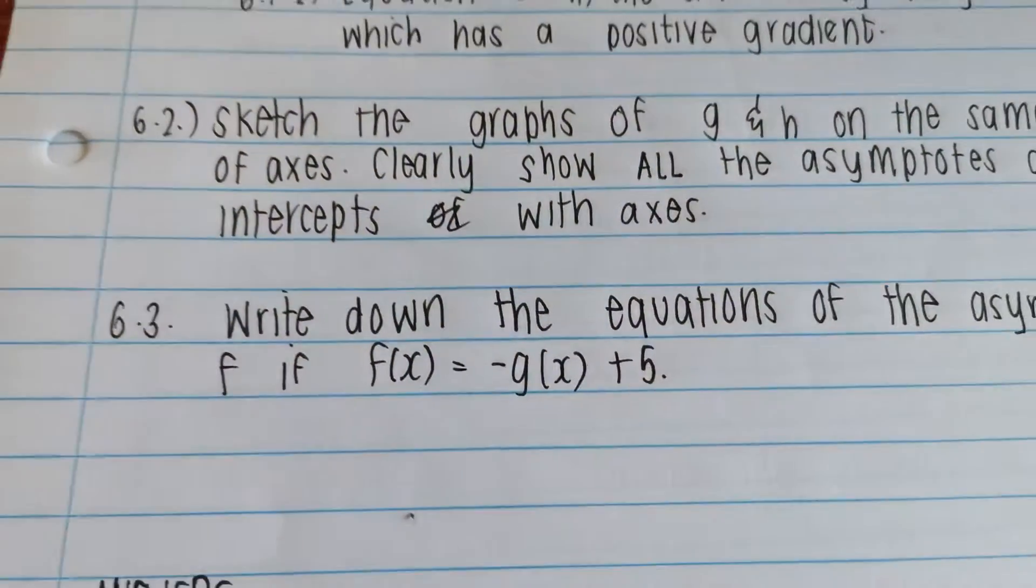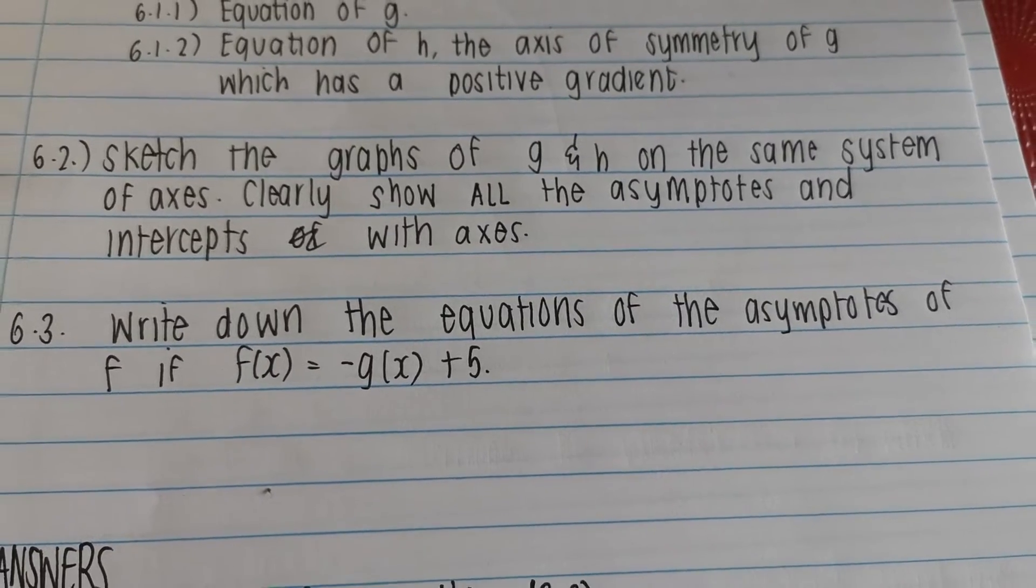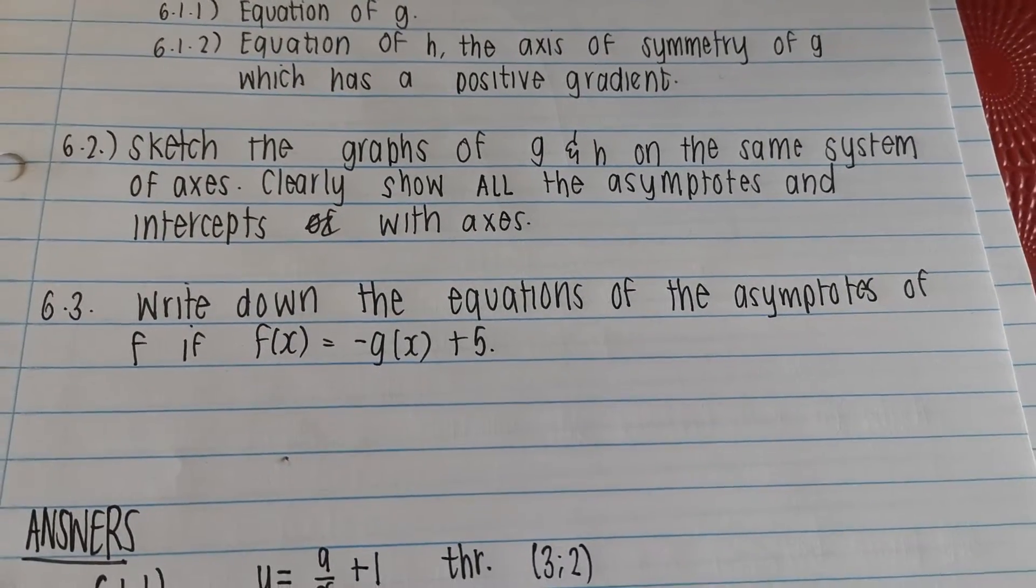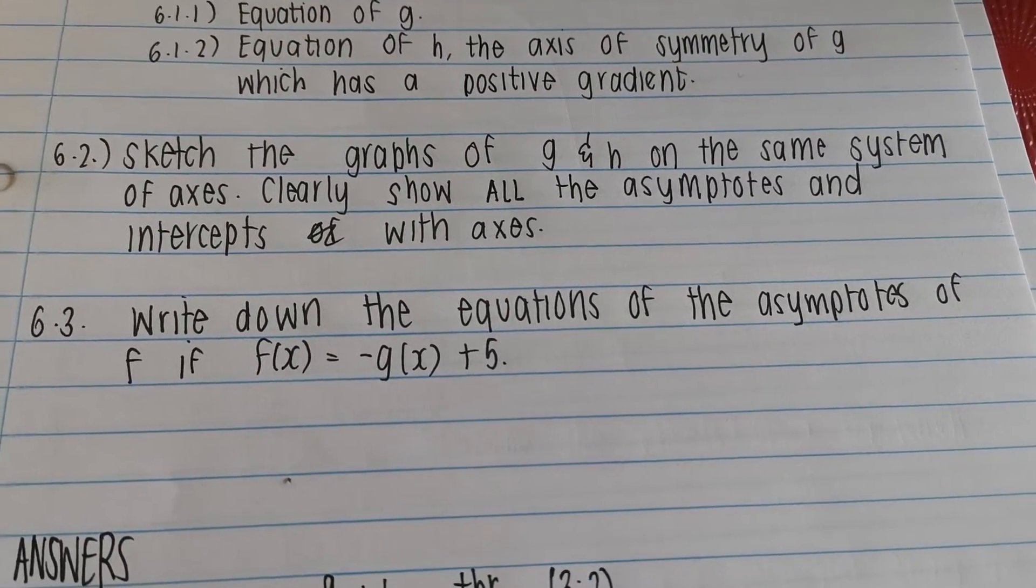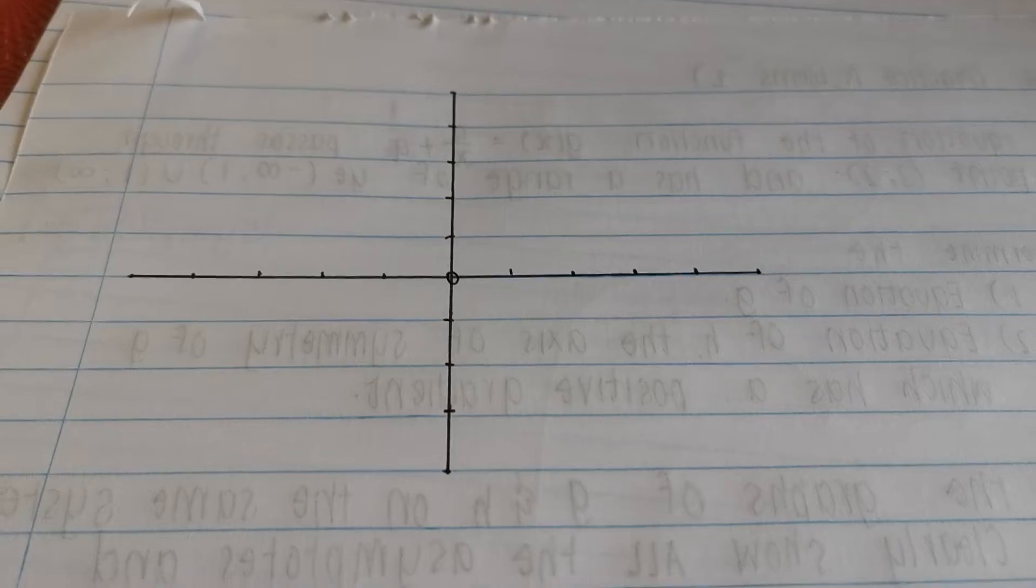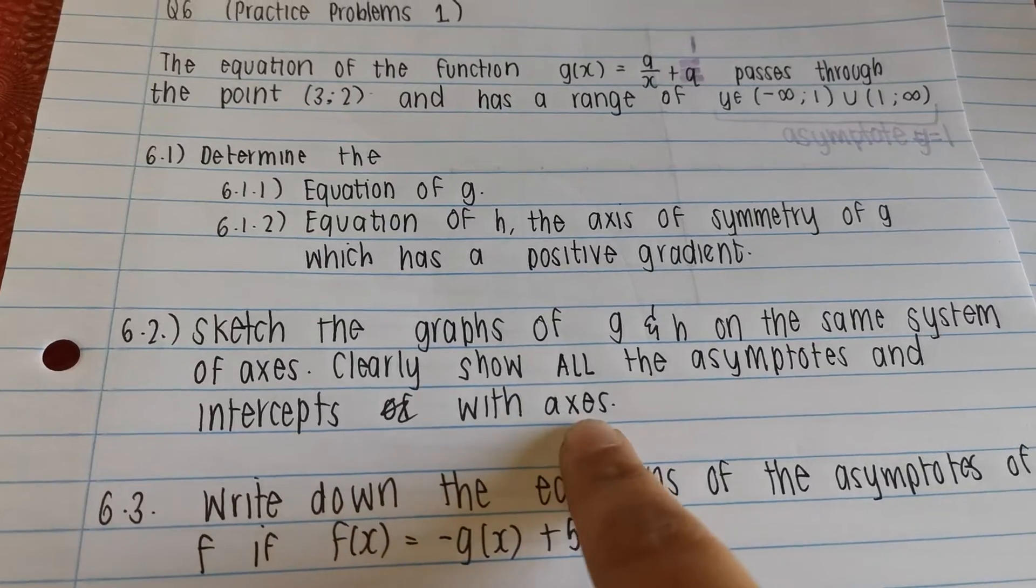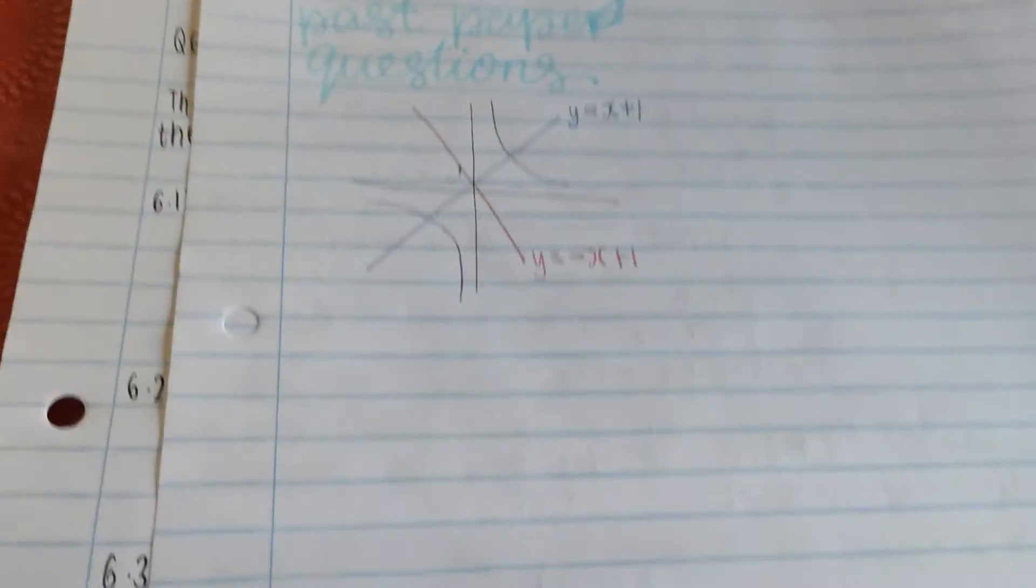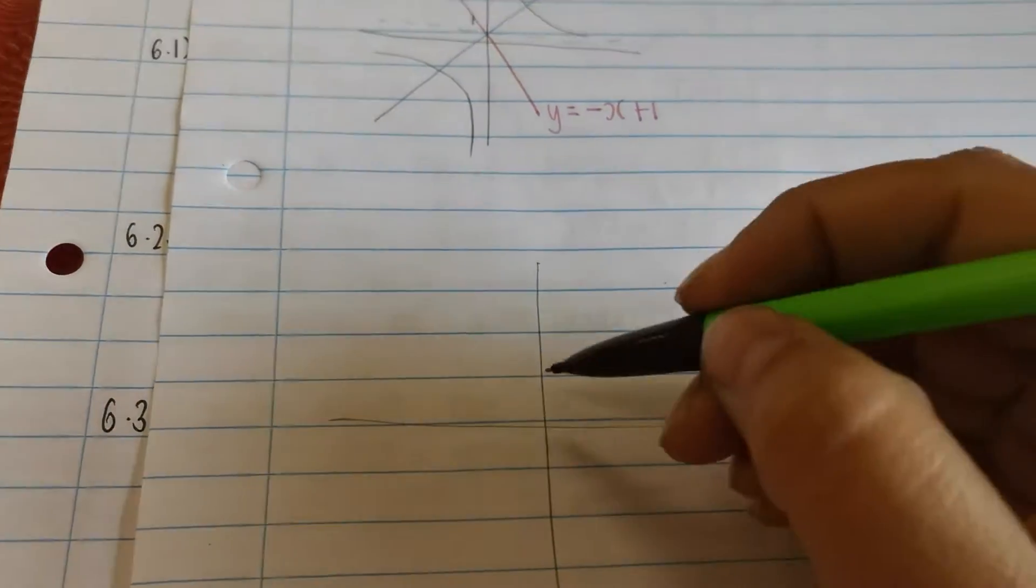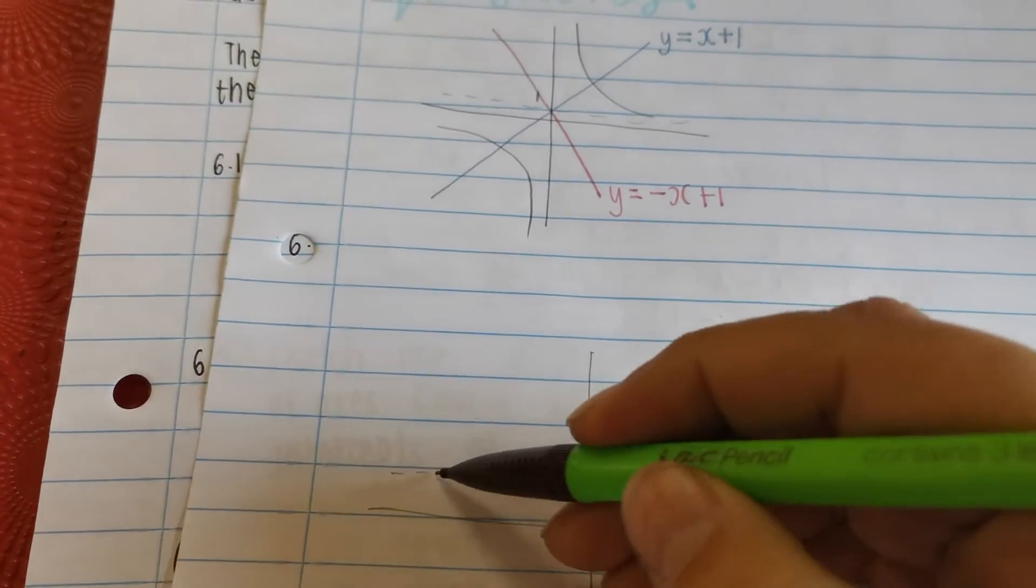It says, sketch the graphs of g and h on the same system of axes. Clearly show all the asymptotes and intercepts with the axes. I'm going to quickly draw a Cartesian plane. So I'm going to pause. I want you to also pause and draw your Cartesian plane. Okay. Draw my Cartesian plane. Now I need to actually find values because it says, it says clearly show the asymptotes and the intercepts with the axes. So I'm going to draw my asymptote.